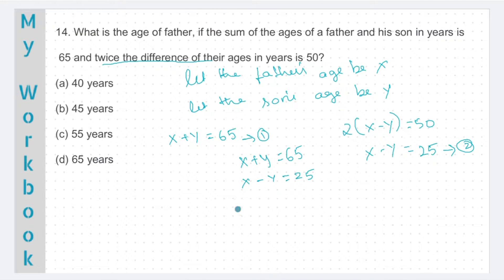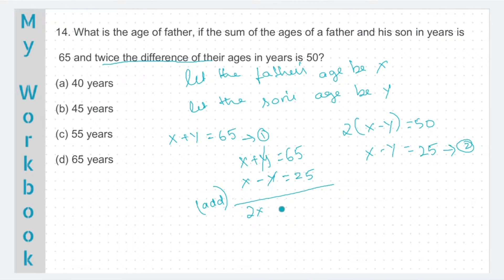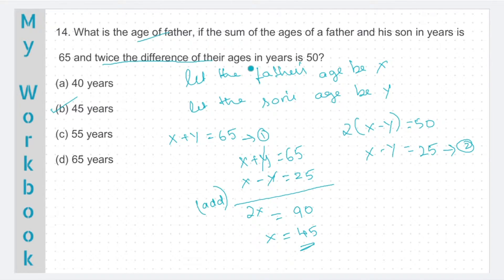Here we see that if we add both the equations, y will get eliminated. So we are just going to add both the equations. x plus x will become 2x. y and minus y will get cancelled. 65 plus 25 will give you 90. So 2x is 90, x will be 45. We need to find the age of the father, which we assumed as x. x is 45. So the answer will be 45 years. Option B, 45 years.